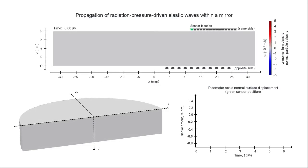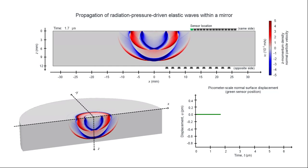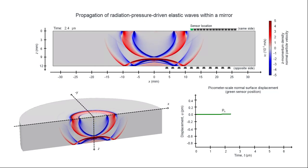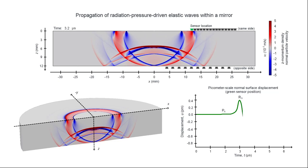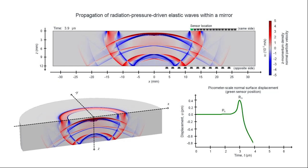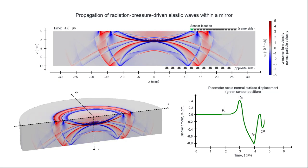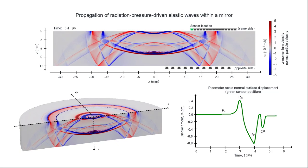The animation is shown again without any pauses. This includes the incident illumination, the generation and propagation of multi-component elastic waves throughout the mirror, and the correlation of the elastic wave components to the measured displacement waveform measured at the sensor location highlighted in green.